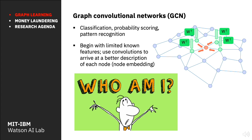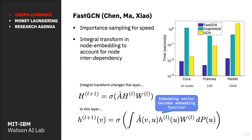Earlier this year at ICLR, my colleagues Jie Chen and Tengfei Ma presented a new method called FastGCN. This work represents a big step forward on scalability — FastGCN was able to beat previous speed benchmarks by two orders of magnitude. It does so by using a variant method for importance sampling and by performing integral transformations during the node embedding process to account for node interdependency. Building on FastGCN, we're now exploring how to advance graph deep learning further.